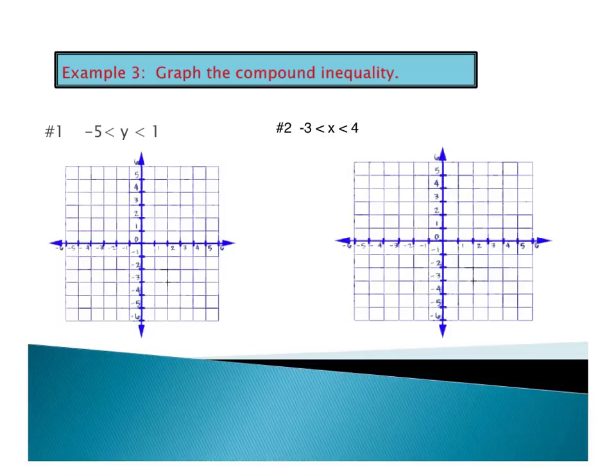We're still going to be dealing with some shading here. For this first one, y is between negative 5 and 1. Let's think about the two equations: y equals 1 and y equals negative 5. Those are both horizontal lines.